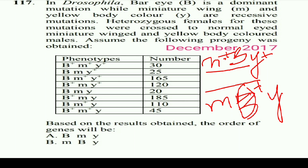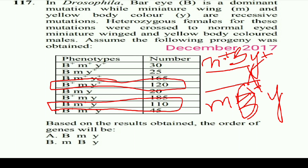Now we have to find crossover between b and y. The m+, b gene will swap with m, b+. That is why we get m+, b, y — that is 110 — and m, b+, y+ — that is 120. These are the single crossover types between b and y.